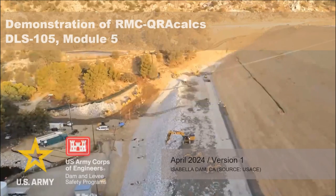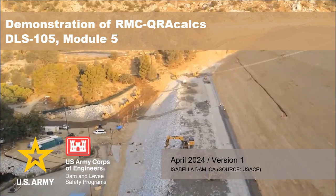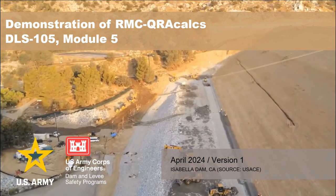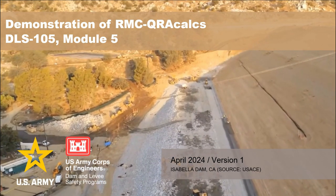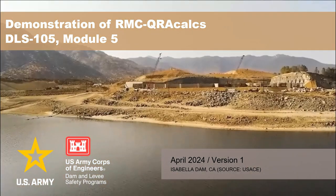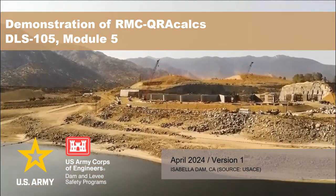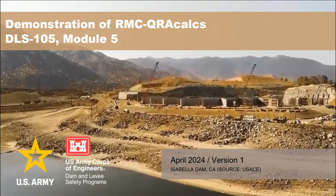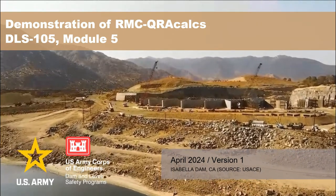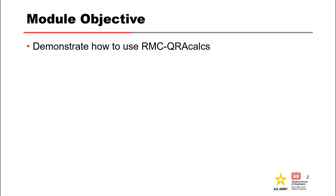Welcome back to DLS 105. This is Module 5, Demonstration of RMC QRA Calcs. RMC QRA Calcs is a suite of Microsoft Excel spreadsheets used to perform the risk calculations for typical dam and levy projects. After completing this module, course participants should be able to demonstrate how to use RMC QRA Calcs to perform the calculations for our risk assessment.